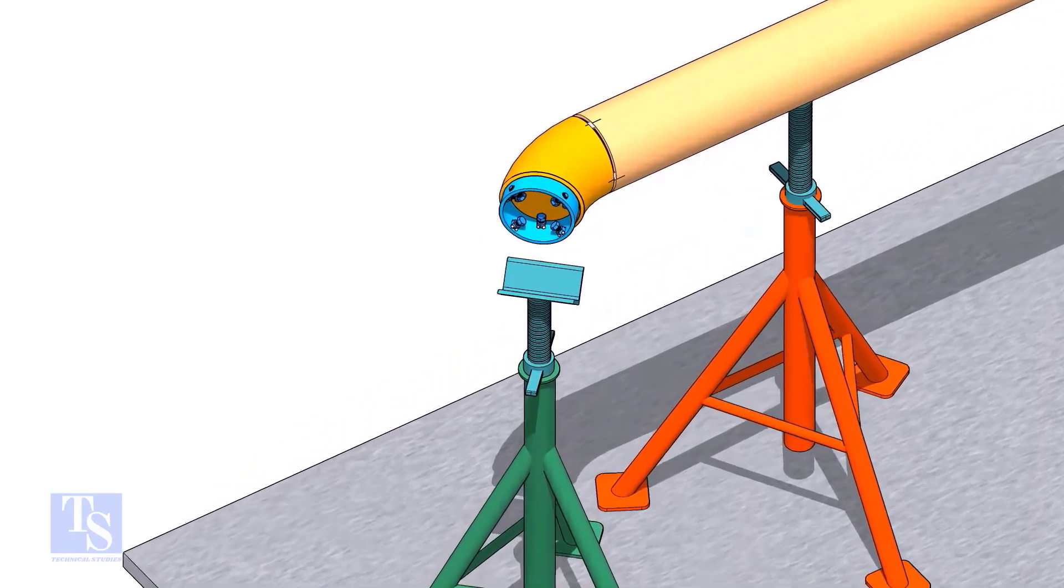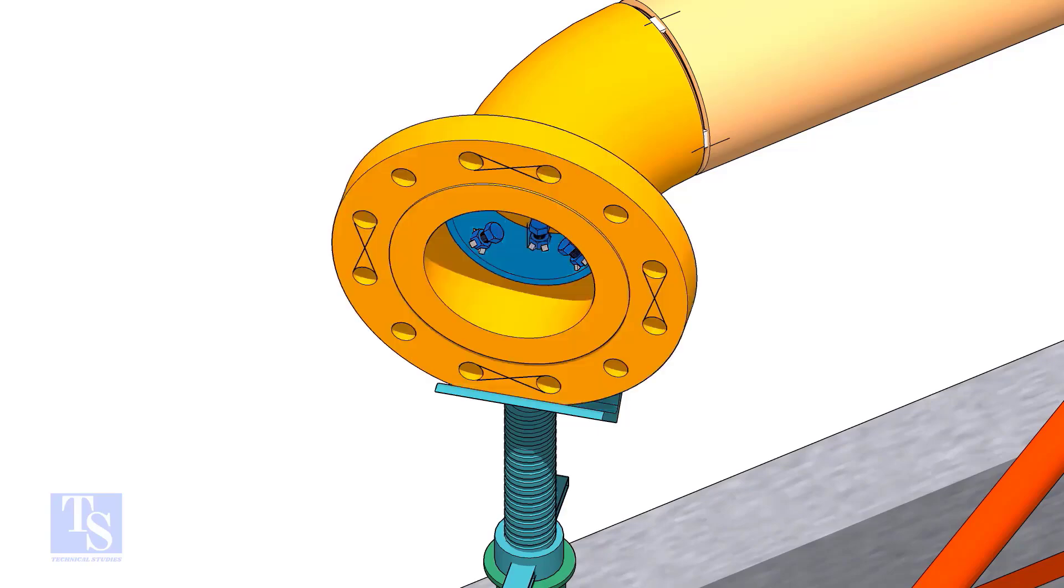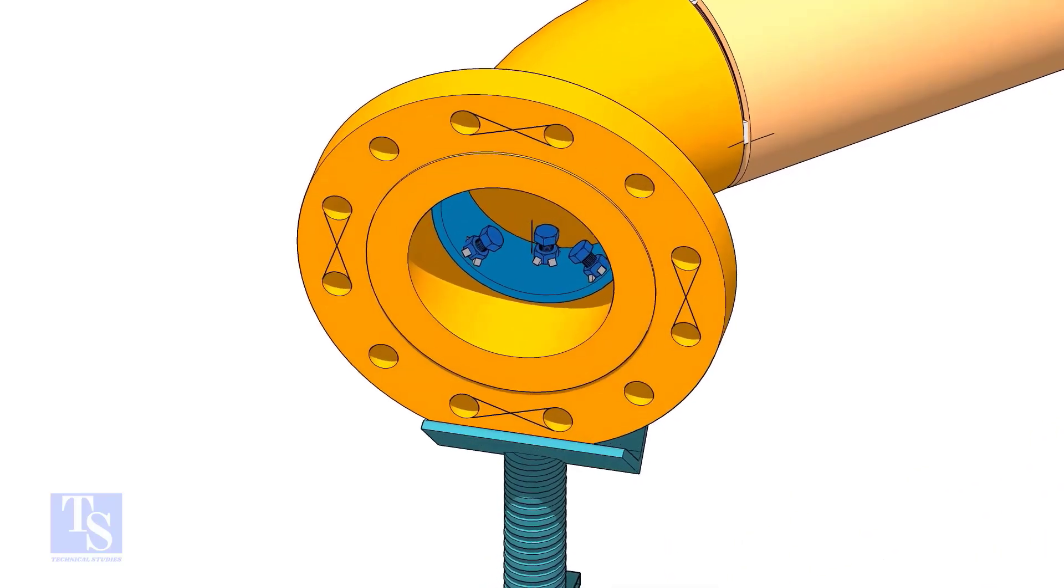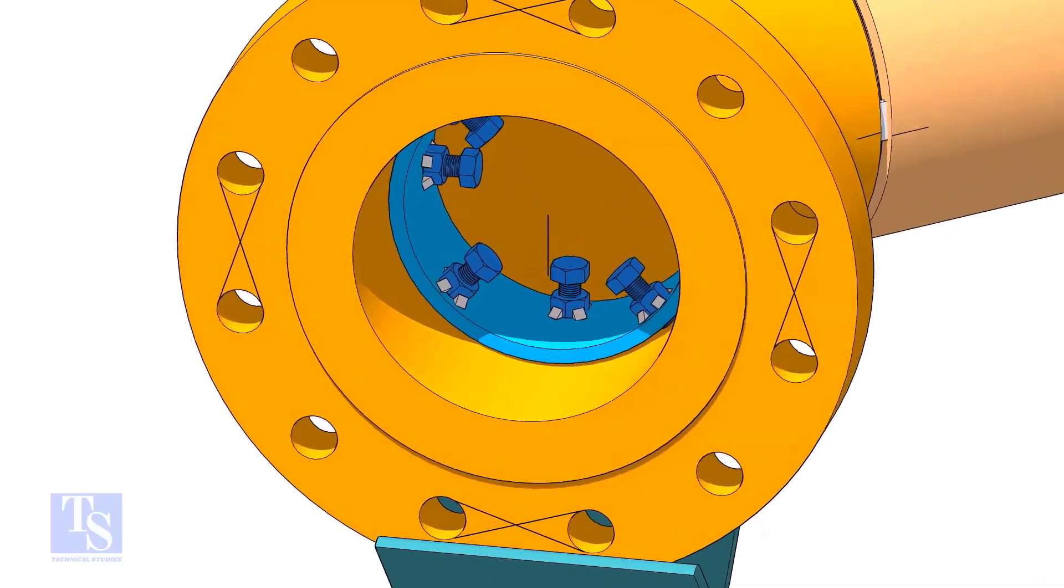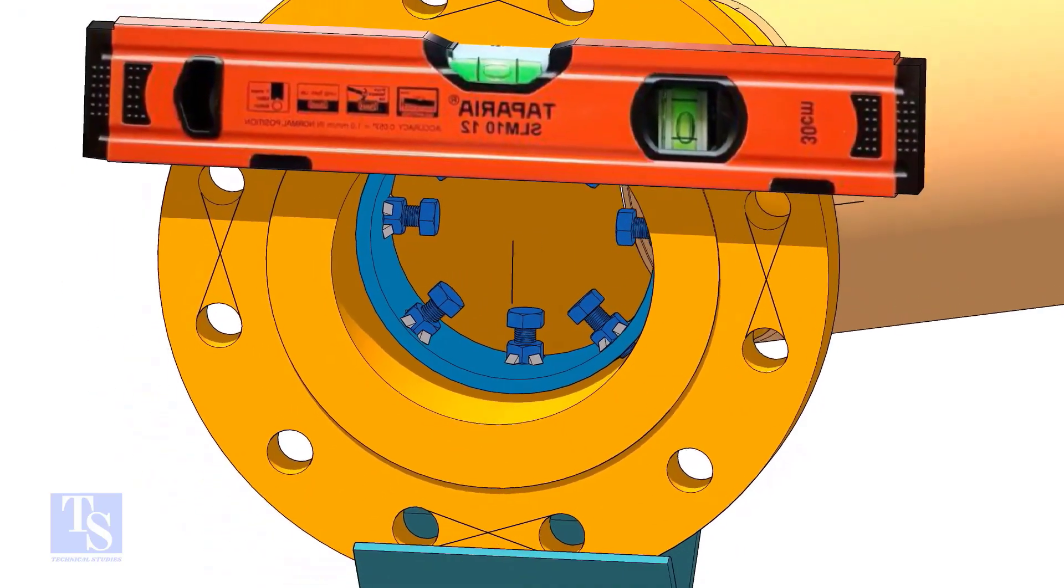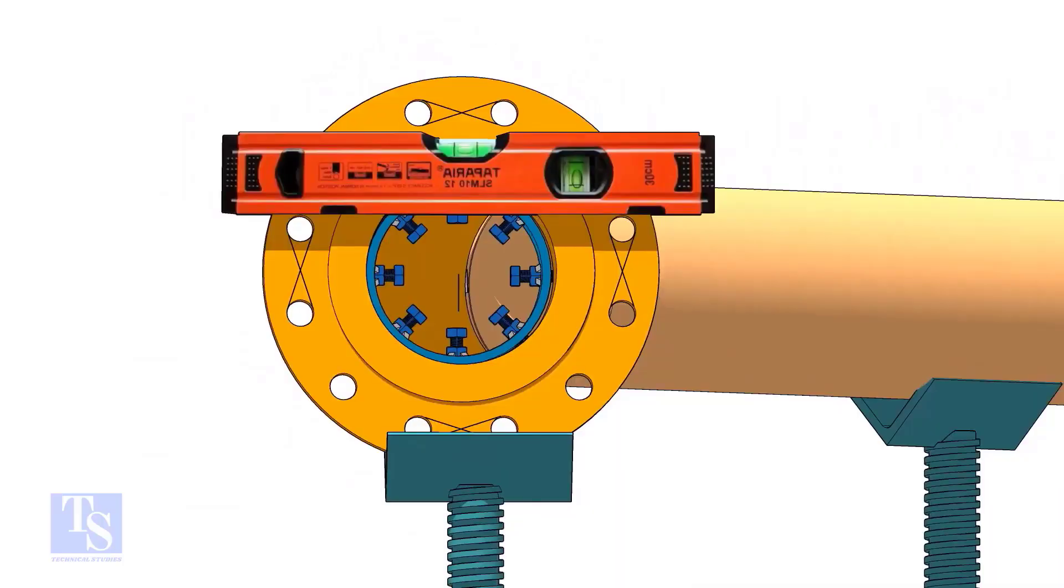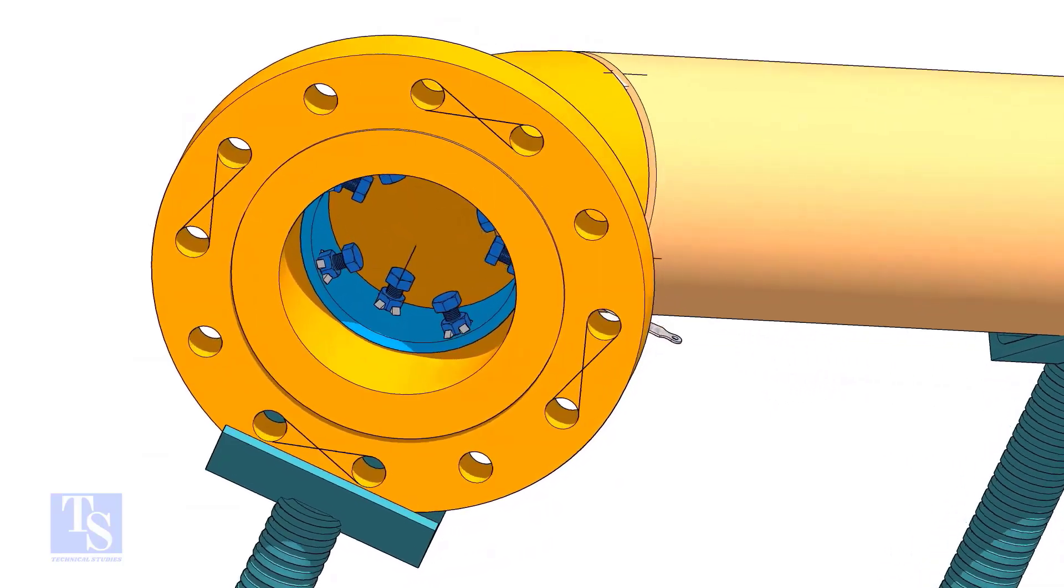Insert the clamp into the elbow and tighten it lightly. Put the flange in position and maintain the level. Tighten the clamp bolts slightly. Check the gap and overlap.